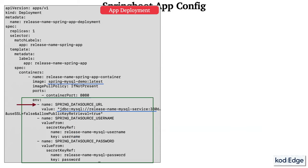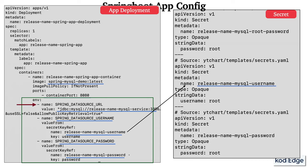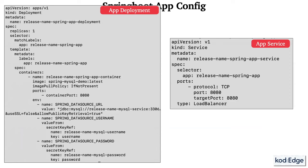Next we configure the database username and password, sourced from the Secrets we already created. We then create a LoadBalancer service for our application. The selector name must match the label defined in the application deployment configuration — this is how the service binds to the Spring Boot application pod. We define the target port binding with the container port, and the external-facing port for incoming traffic. This is how the final configuration looks.